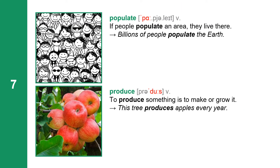Next one: populate. Populate has three syllables. Populate is a verb. The noun form is population: P-O-P-U-L-A-T-I-O-N. If people populate an area, they live there. Billions of people populate the earth.